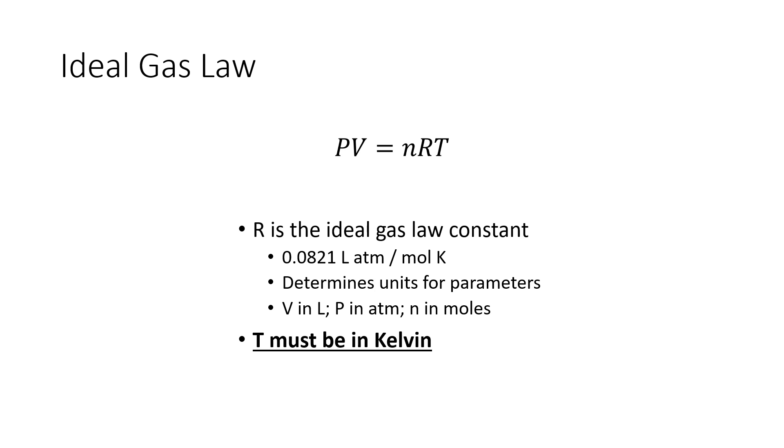The ideal gas law says that PV equals nRT. P is the pressure, V is the volume, n is the number of moles of the gas. R is something known as the ideal gas law constant, which has a numerical value of 0.0821 in weird units, liters times atmospheres divided by moles and Kelvin. And then T is the temperature.